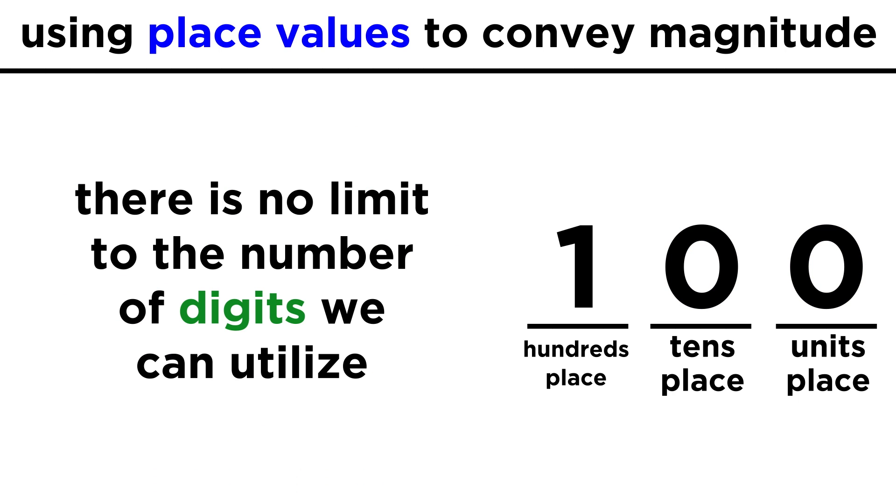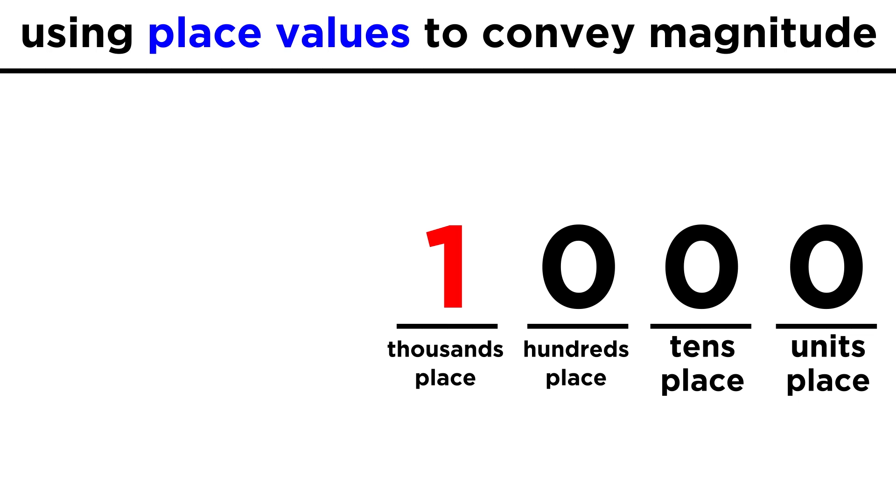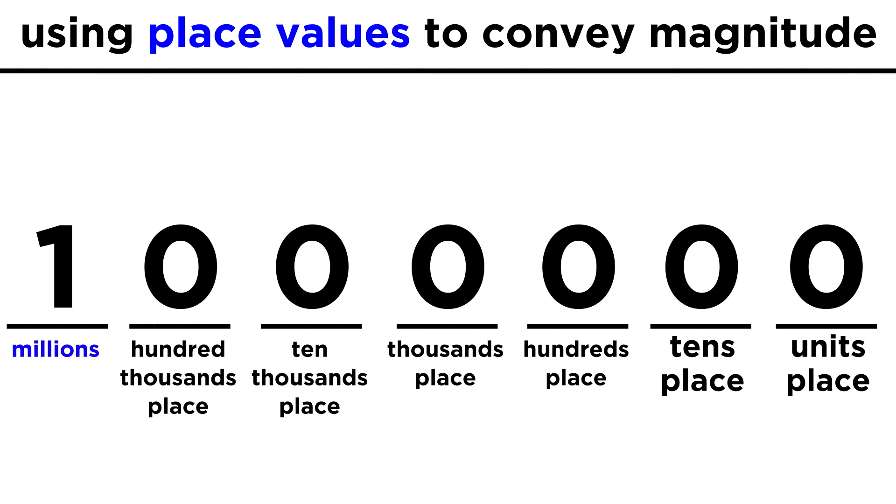This process can continue ad infinitum. Every time all the digits reach nine, we add a new digit to the left, a one, while all the others go back to zero: thousands place, ten-thousands, hundred-thousands, millions, and so forth.